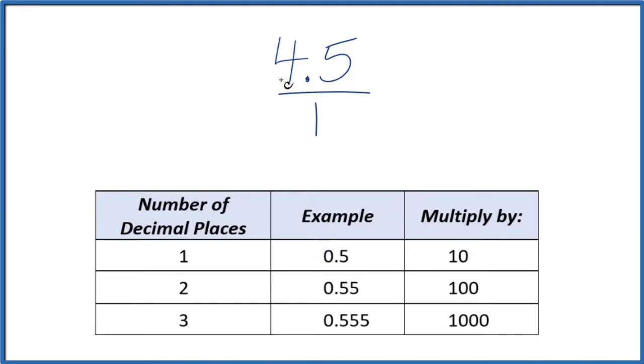Next, let's get this to be a whole number. That'll be a little bit easier if we do that. So to get this to be a whole number, we have one decimal place here. So one decimal place, we're going to multiply by 10.